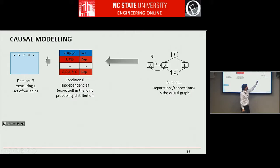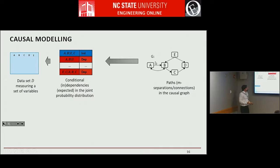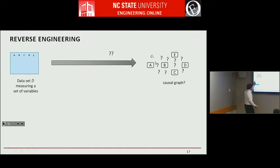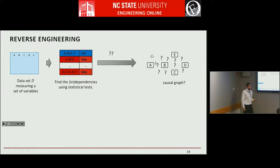If we know the causal graph, we can use the theorem and figure out the m-connections and m-separations to determine what dependencies and independencies to expect in the data. What we're trying to do is go from the data to the causal graph — solve the reverse engineering problem. From the data we can determine whether certain dependencies and independencies hold using statistical conditional independence tests, and figure out whether certain conditional associations hold or not.